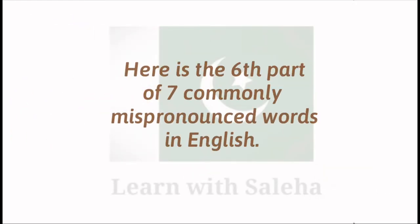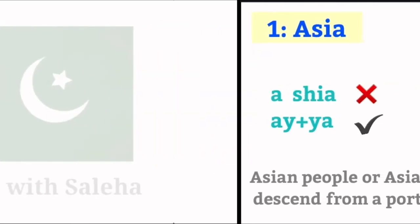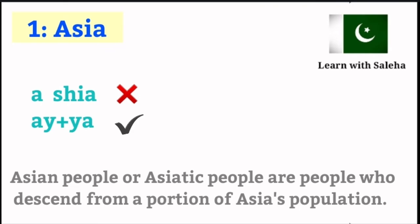Here is the 6th part of 7 commonly mispronounced words in English. Number 1: Asia. It's not Asia, it's Asia. Example sentence: Asian people or Asiatic people are people who descend from a portion of Asia's population.